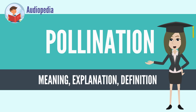When self-pollination occurs within a closed flower, pollination often occurs within a species. When pollination occurs between species, it can produce hybrid offspring in nature and in plant breeding work.